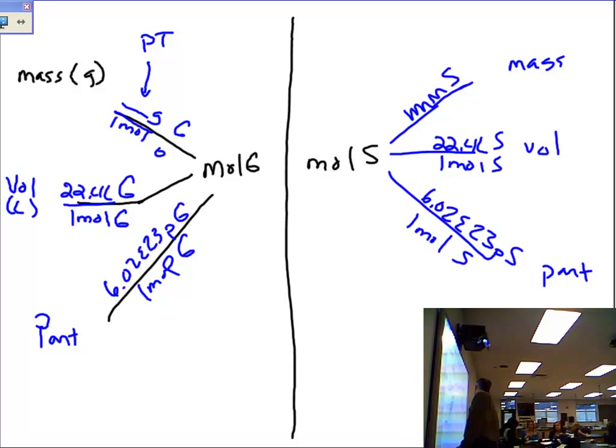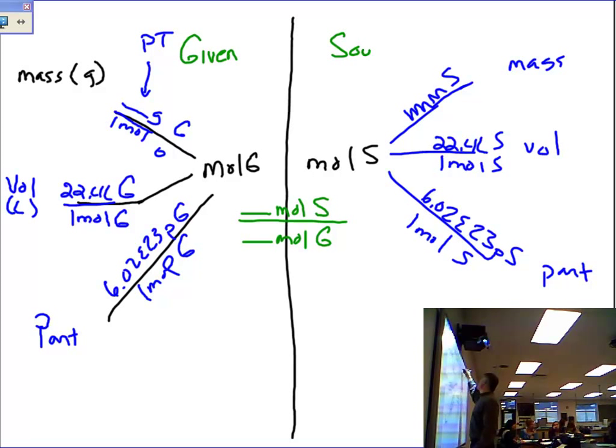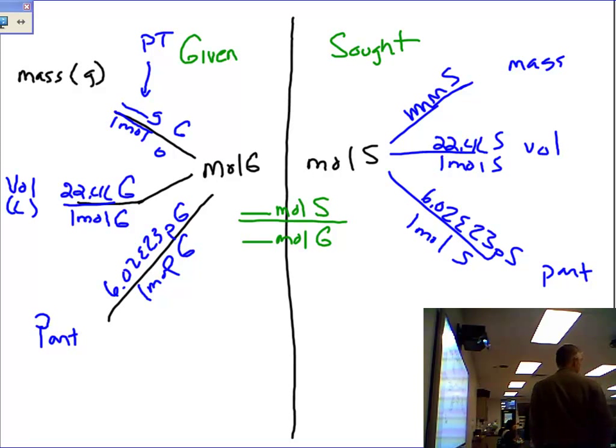Now, when you're going from moles to moles, you will always say x number of moles of the S over x number of moles of the G. Now, what does S and G stand for? G stands for the given chemical, and S stands for the sought chemical. All right, so that's kind of the mole map, the short version of the mole map.